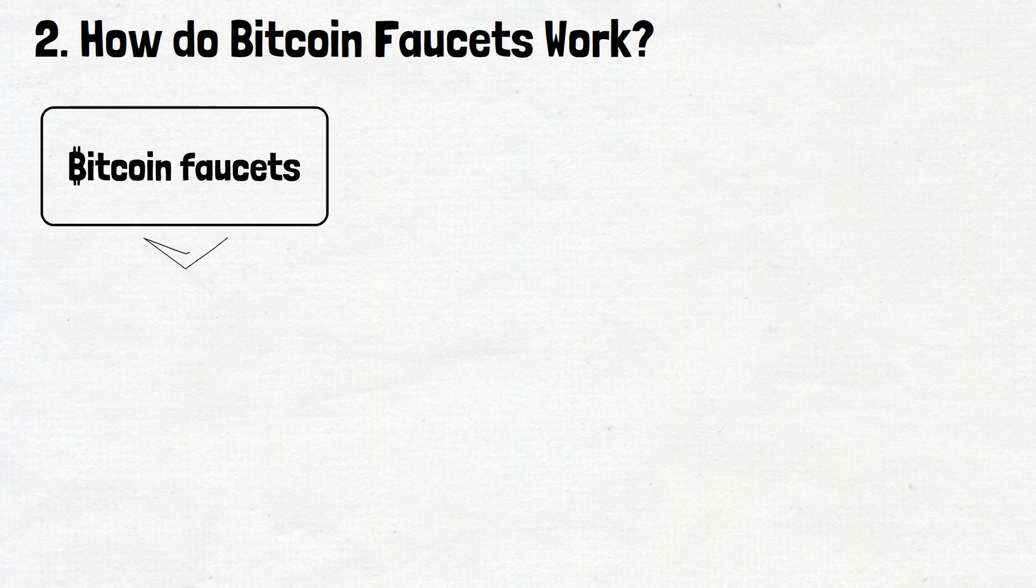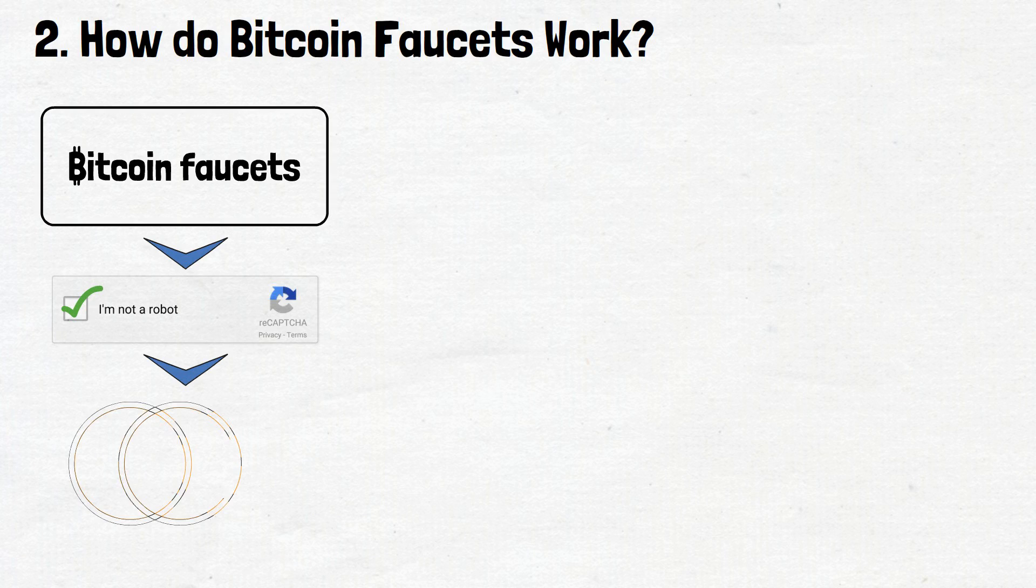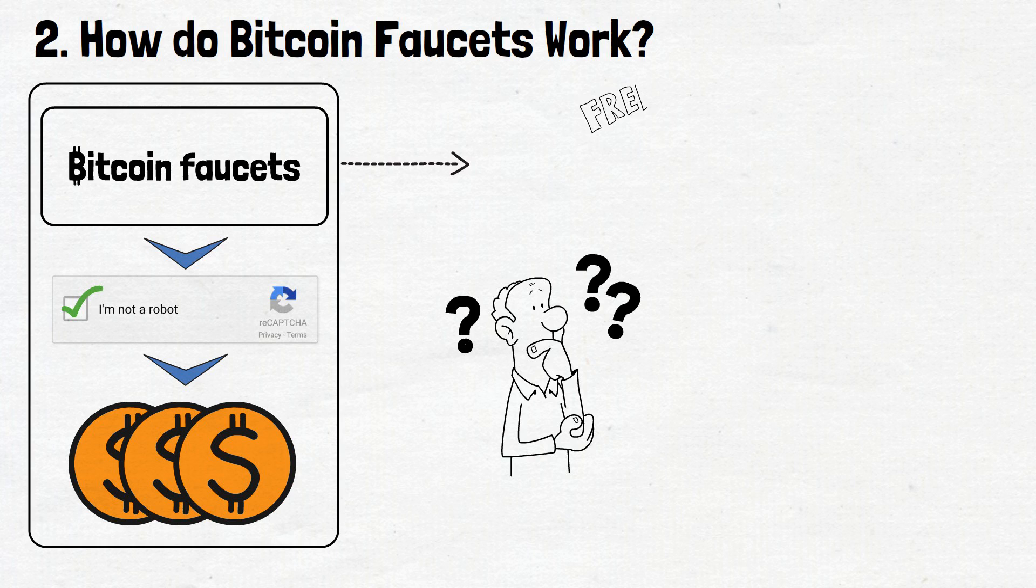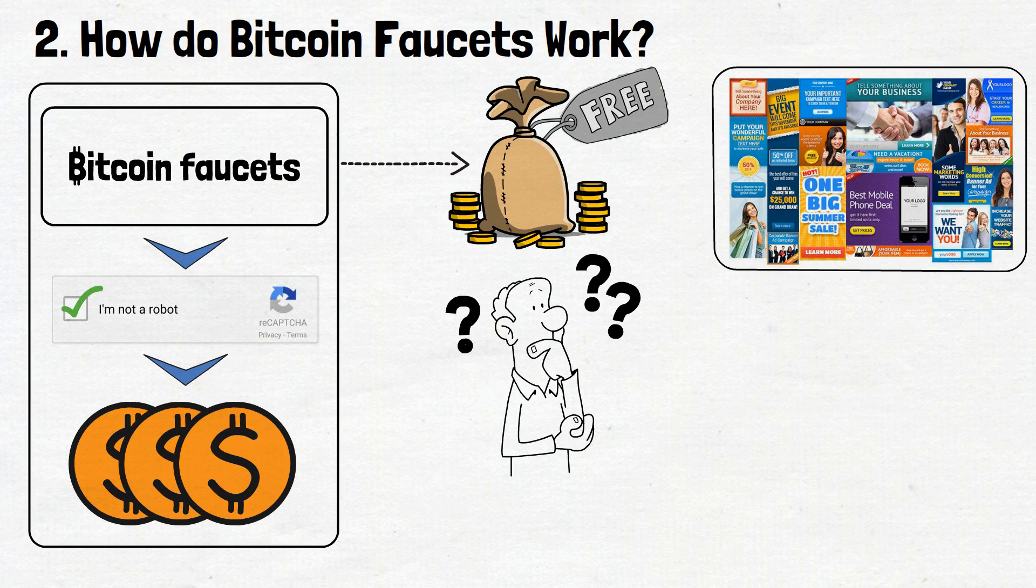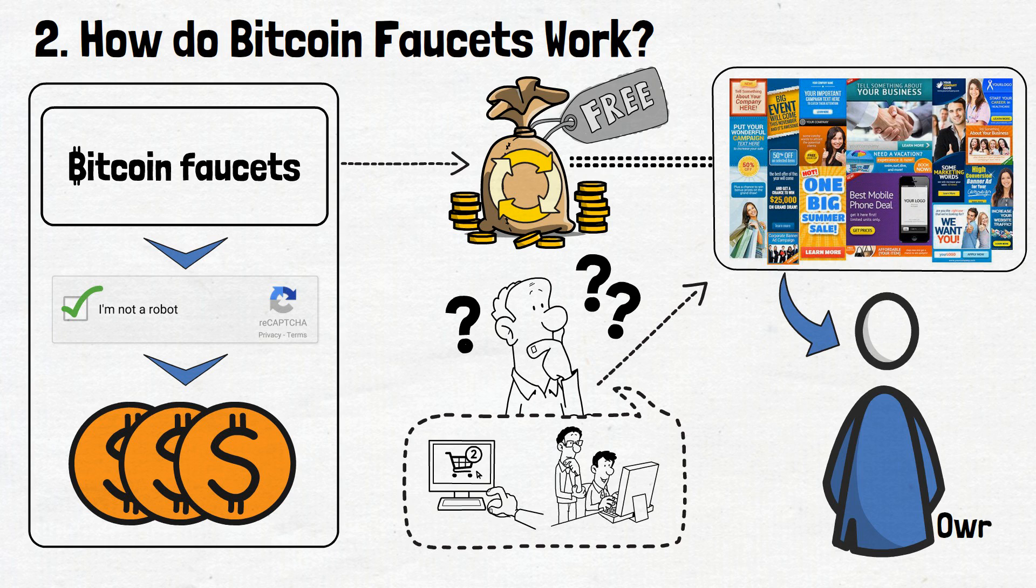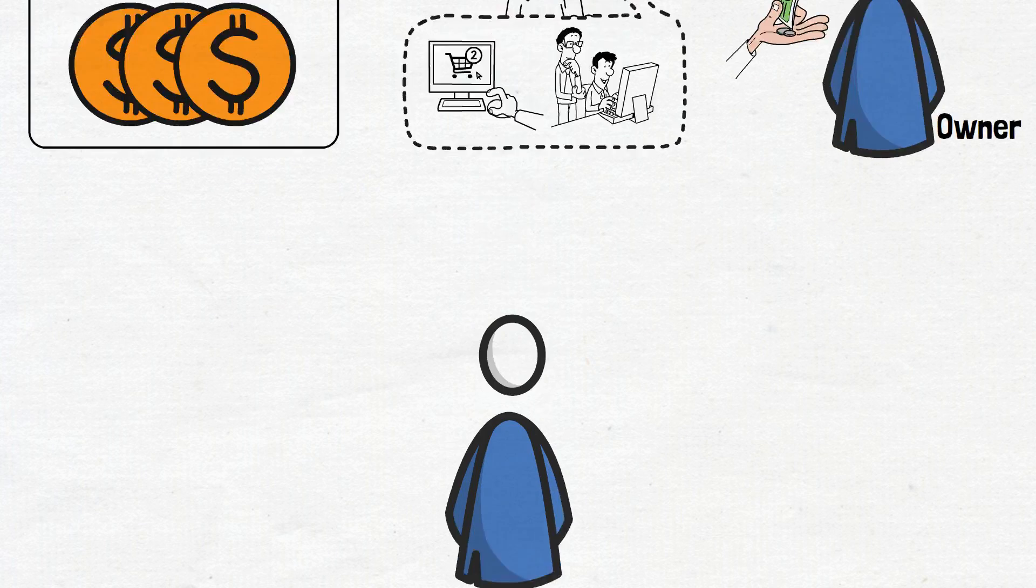So, you've visited a faucet, solved the captcha, and claimed your satoshis. But how does all of this really happen? How do these faucets manage to give away crypto for free? First off, remember those ads we talked about? They're a big part of how faucets keep the crypto flowing. Every time you interact with an ad on a faucet site, whether it's by clicking on it or just viewing it, the faucet owner earns a small reward. But here's the thing, faucet owners don't keep all of that ad money for themselves.